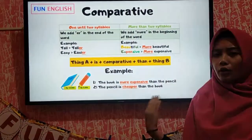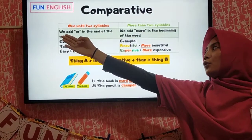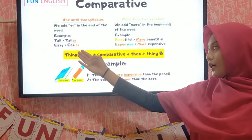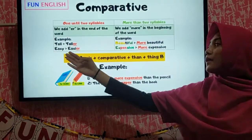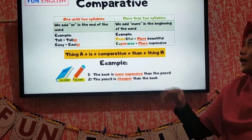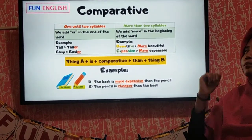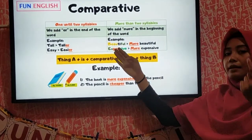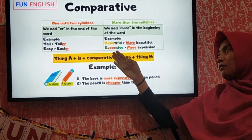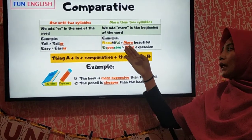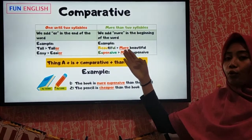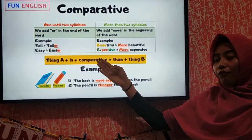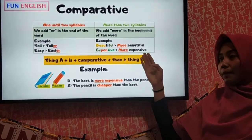So what are we going to do? We just put '-er' at the end of the word. For example, 'tall' becomes 'taller,' and 'easy' becomes 'easier.' But when we have more than two syllables, we have to put 'more' at the beginning of the word. For example, 'beautiful' has three syllables, so it becomes 'more beautiful.' And 'expensive' — three syllables — becomes 'more expensive.'